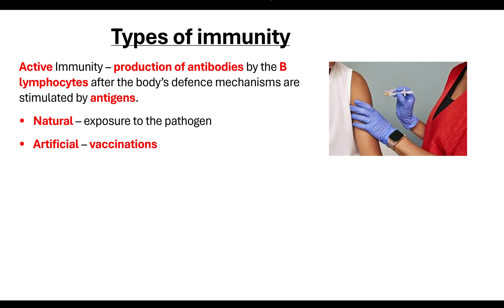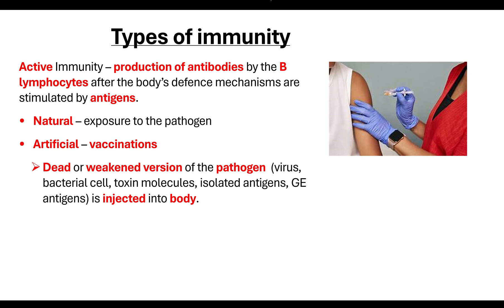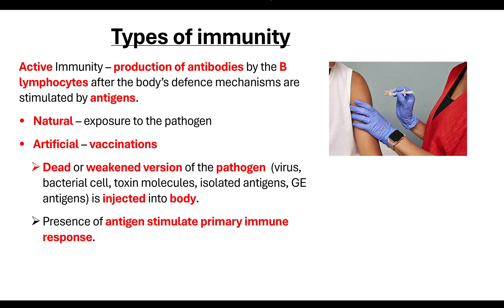An artificial active immunity is where you are vaccinated against the potential exposure of a pathogen. You are given either a dead or weakened version of the pathogen — this could be the virus, a bacterial cell, a toxin molecule, an isolated antigen, or a genetically engineered antigen. Whatever that dead or weakened version is, it is injected into the body, resulting in clonal selection and clonal expansion so that your B lymphocytes are activated to produce the necessary antibodies against that pathogen.